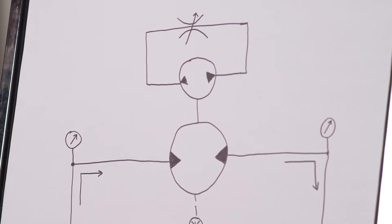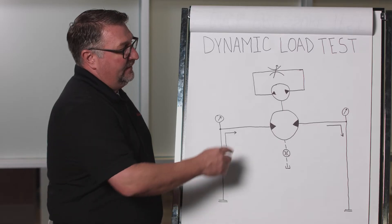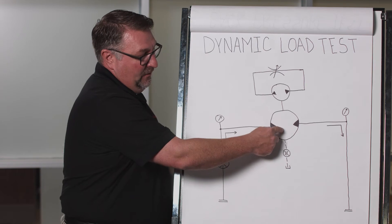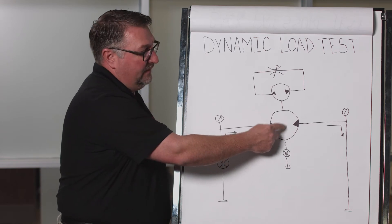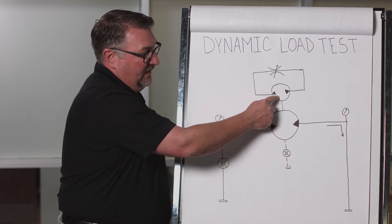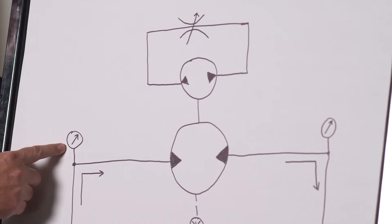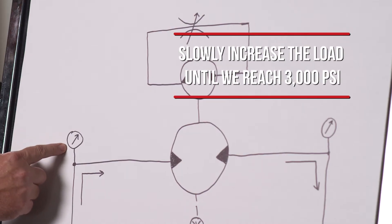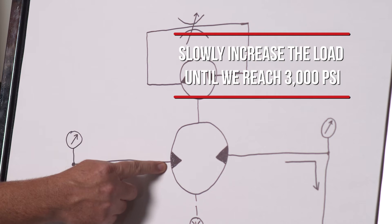We will record that RPM output, then we will increase the load on the hydraulic motor coupled to our hydraulic pump all the way up to the point that we get to 3000 psi on the inlet side of the hydraulic motor.